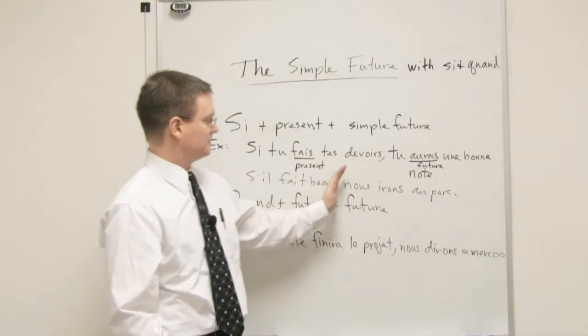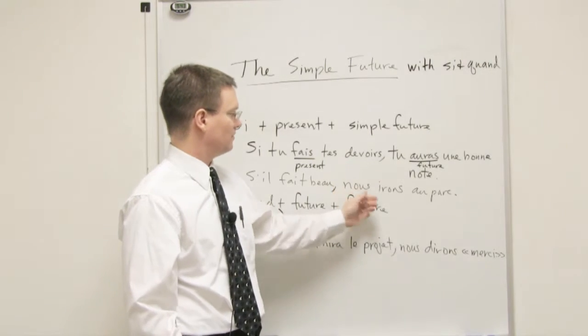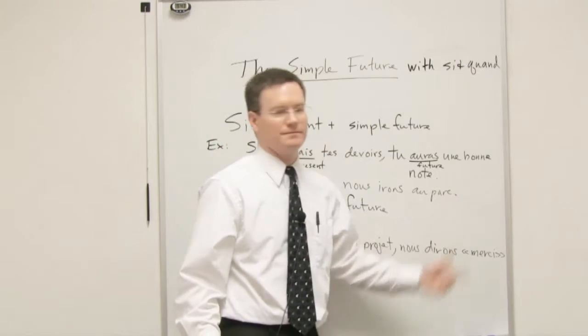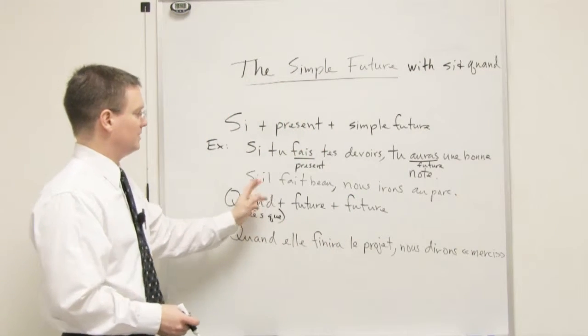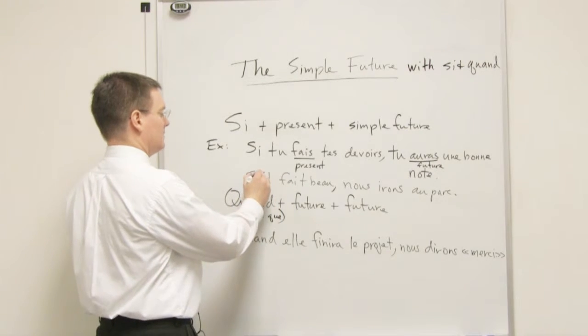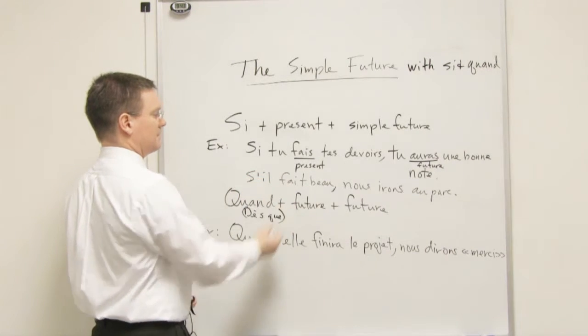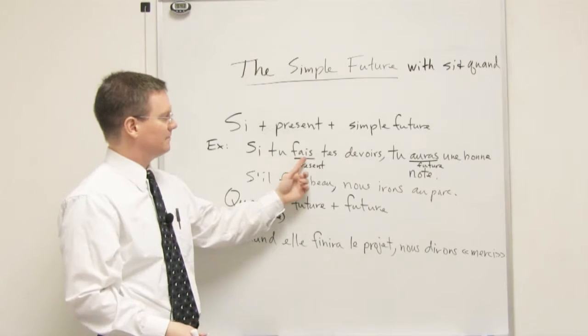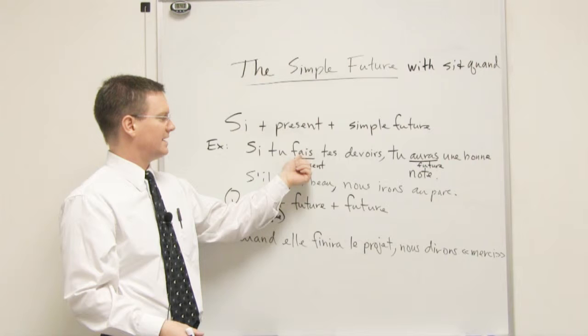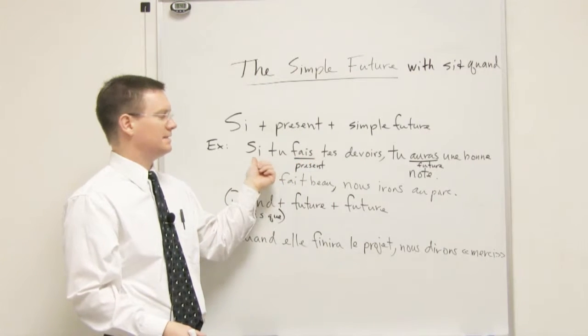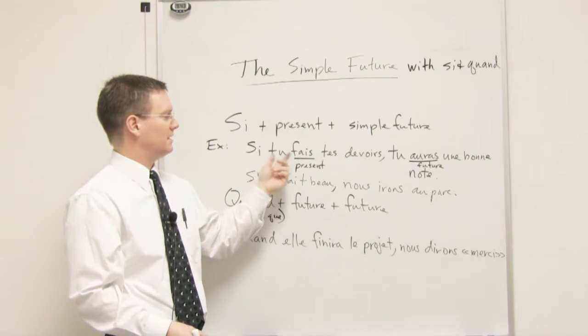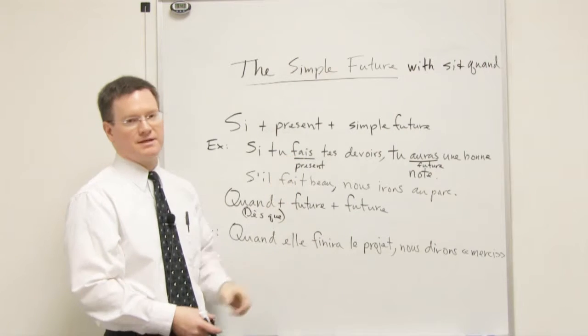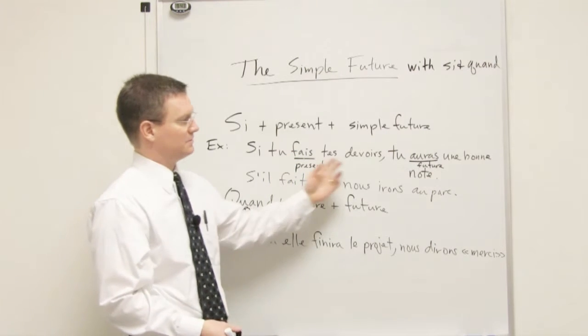Or, you can also say, nous irons au parc s'il fait beau. And you can put the si over here if you want. Either way, you have si, and you have the present, right after si. By the way, you can never put the future or conditional right after a si, a conditional si. It has to be, in this case, the present tense, if you're going to be using the future.